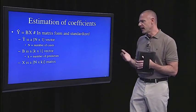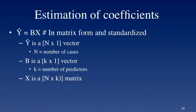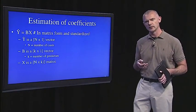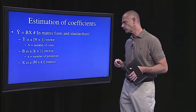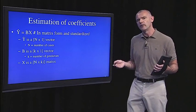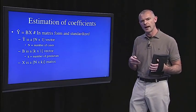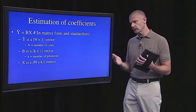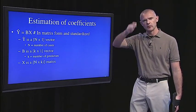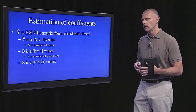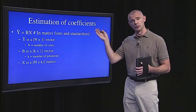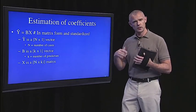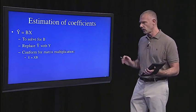Y is just an n by one column vector, so however many people we have in our study, that's how many predicted scores we have. We're just dealing with one outcome variable. The betas are just a K by one vector. So for each predictor, we're going to have one beta, or one regression coefficient. And then X is going to be a matrix, an n by K matrix. The rows correspond to individual subjects or cases, and the columns correspond to individual predictors. Now using matrix algebra, we can estimate these regression coefficients in the beta matrix all at once.